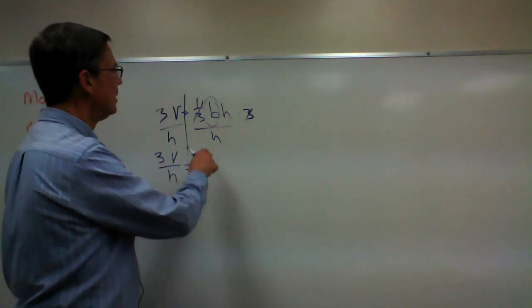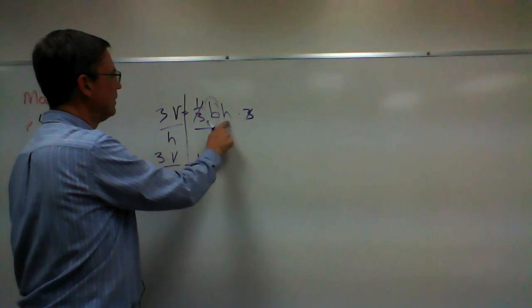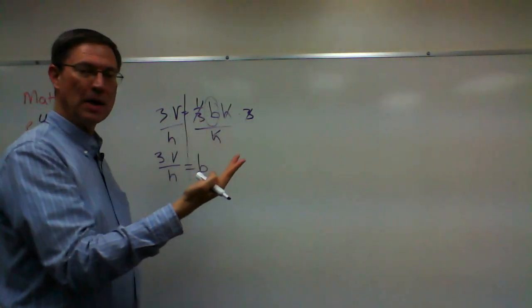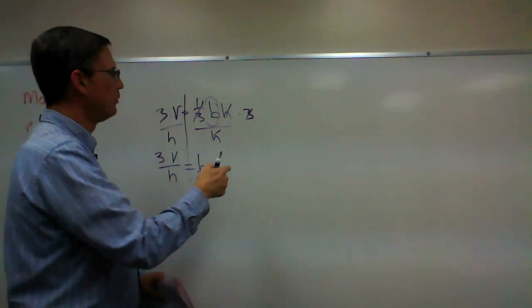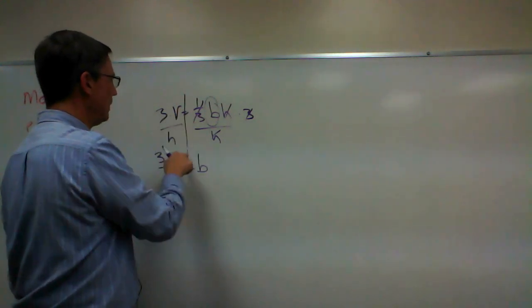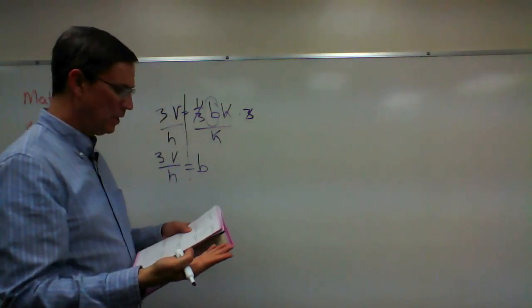So you see what we did? We took the original formula, one-third base times height, solved for the base, which is what we're asked to solve for in question number three. Multiply by three, divide by h. Now I have a formula, and they tell me the numbers.